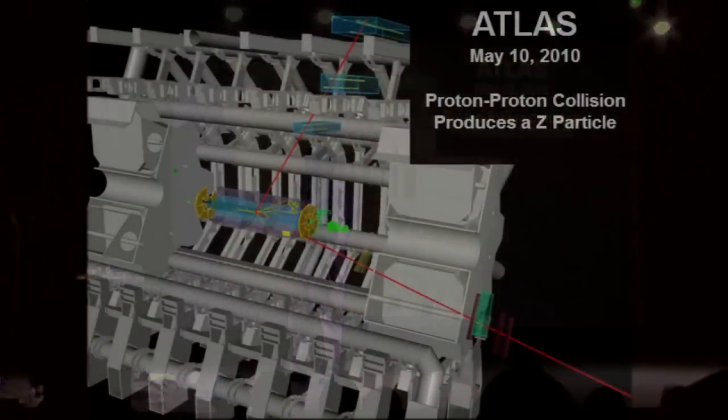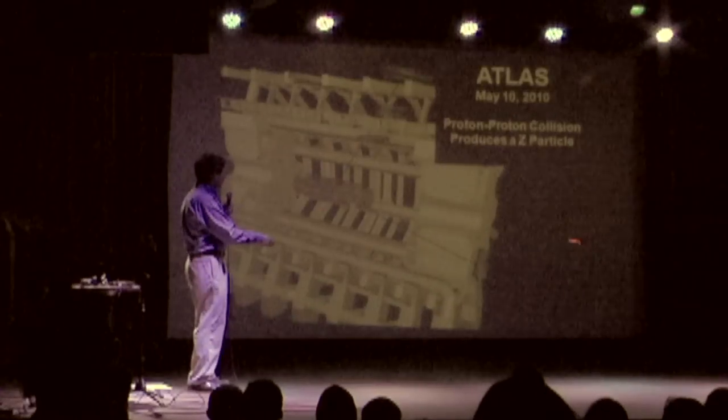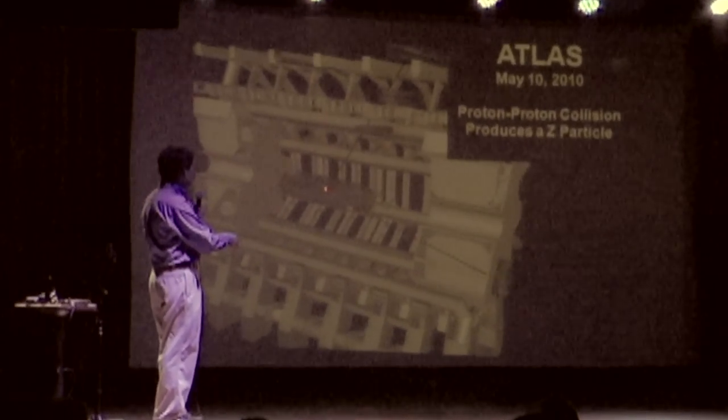There were many of these during the past year. This was the first one that they observed in which a Z particle was created right here. Proton came in this way, another proton came in that way. They collided.